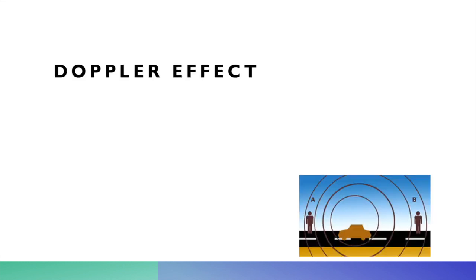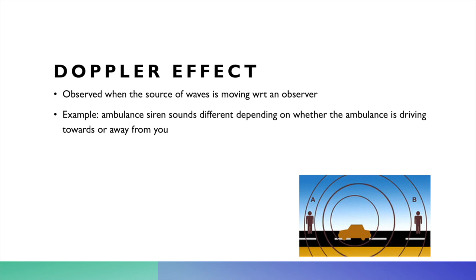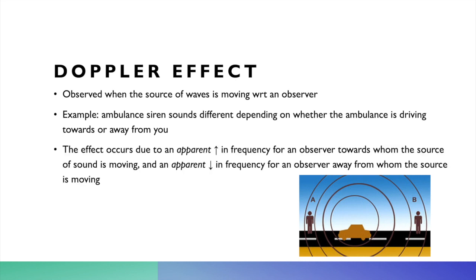This image illustrates the Doppler effect, which is observed when the source of sound waves is moving with reference to an observer. A common example is the ambulance siren — the sound is heard differently depending on whether the ambulance is driving towards or away from you. This effect occurs due to an apparent increase in frequency when the source of sound is moving towards the observer.